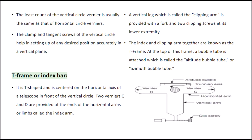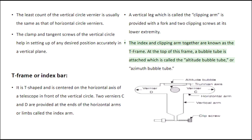T-frame or Index Bar. It is T-shaped and is centered on the horizontal axis of the telescope in front of the vertical circle. Two verniers C and D are provided at the ends of the horizontal arms or limbs called the index arm. A vertical leg, called the clipping arm, is provided with a fork and two clipping screws at its lower extremity. The index and clipping arm together are known as the T-frame. At the top of this frame, a bubble tube is attached, which is called the altitude bubble tube or azimuth bubble tube.